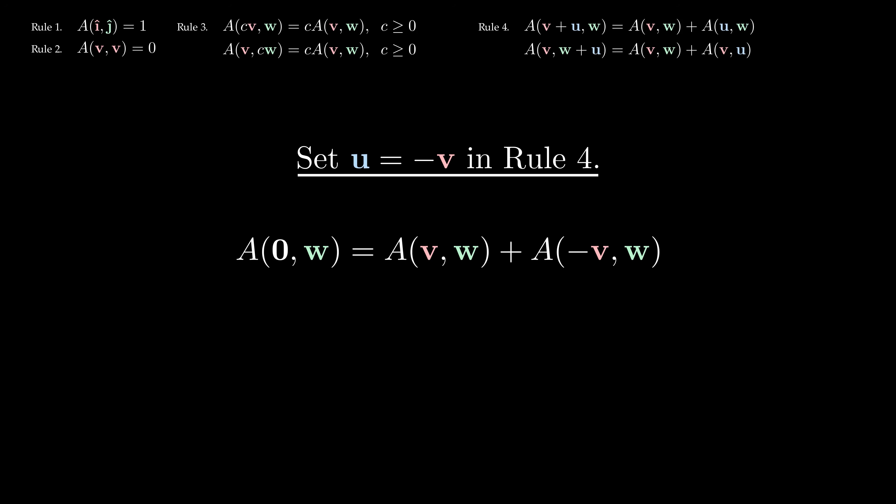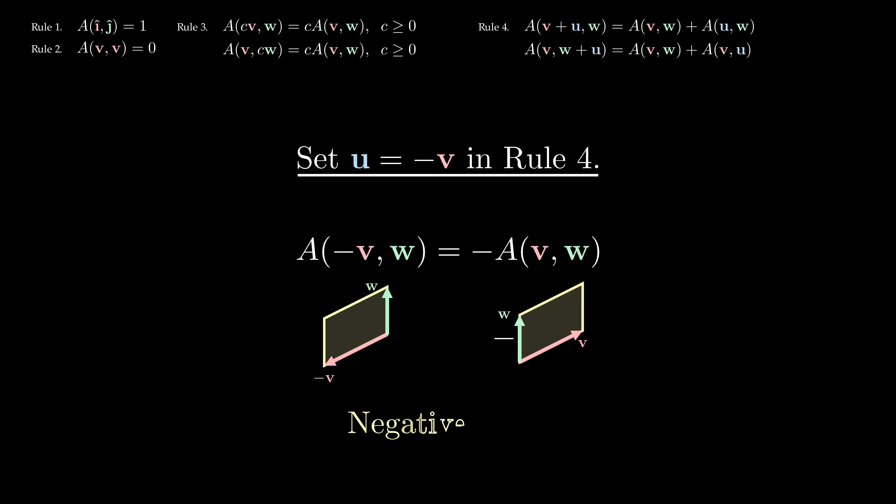And any parallelogram involving the zero vector has zero area. Rearranging this equation, we see that the area of the parallelogram formed by minus v and w is negative the area of the parallelogram formed by v and w.